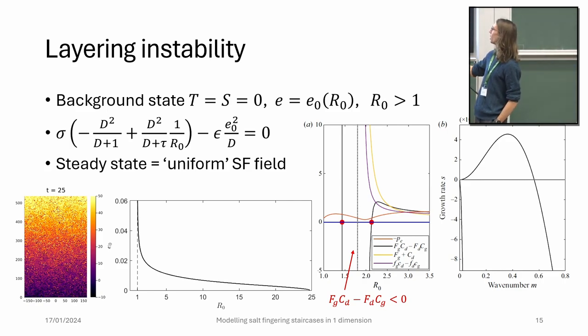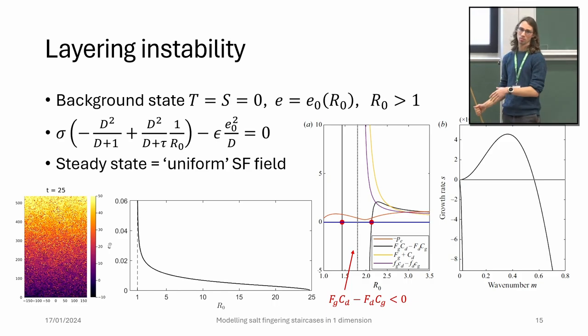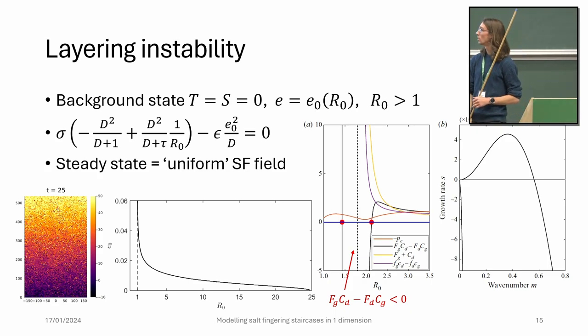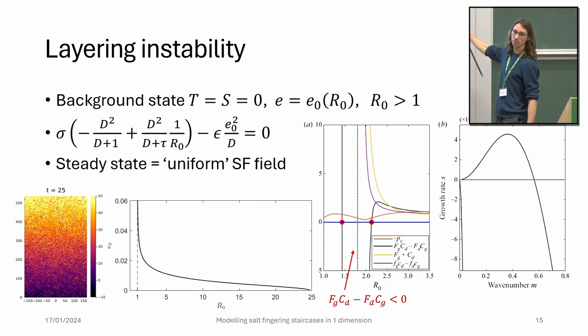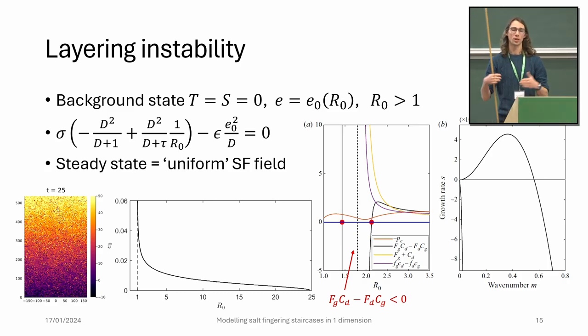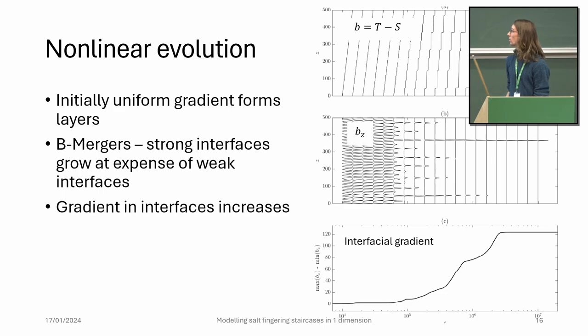If we look at the instability conditions around this background state, we get this black curve. The key point is that we've got this region where F_G C_D - F_D C_G is negative. In this region, we expect there to be a layering instability. If we pick a value of R_0 and look for the growth rate, we find this growth rate curve where we've got an increase and then a decrease. So we've got this well-defined most unstable mode which is going to predict the initial spatial scale of the layers formed.